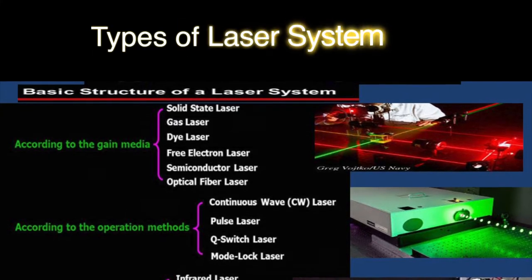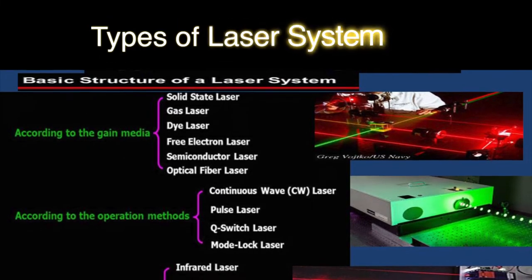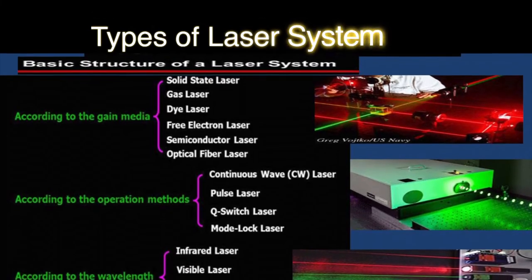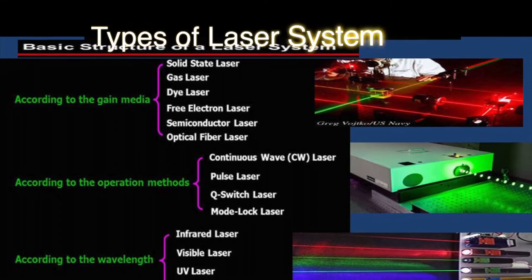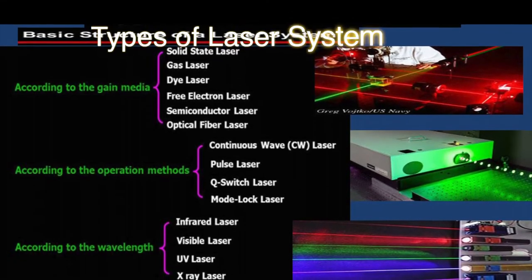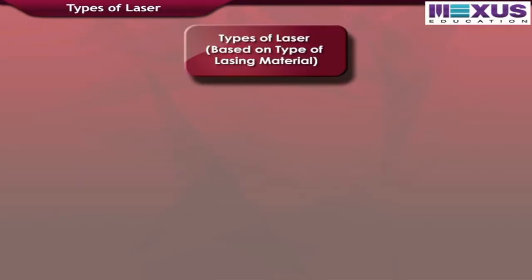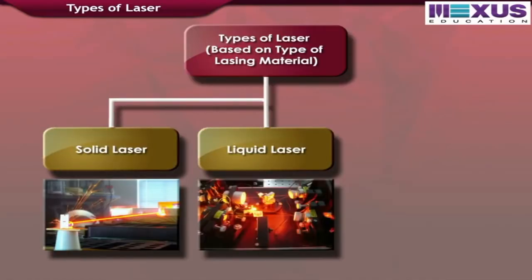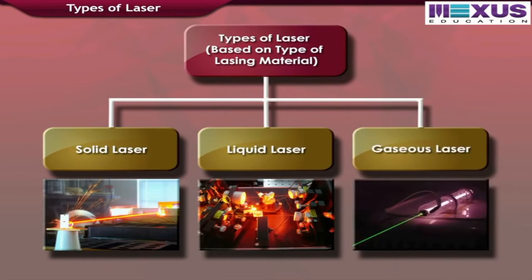There are different types of lasers, and the basic structure of a laser system depends on the gain media, the method of operation, and the emitted wavelength. There are three types of laser: solid laser, liquid laser, and gaseous laser.